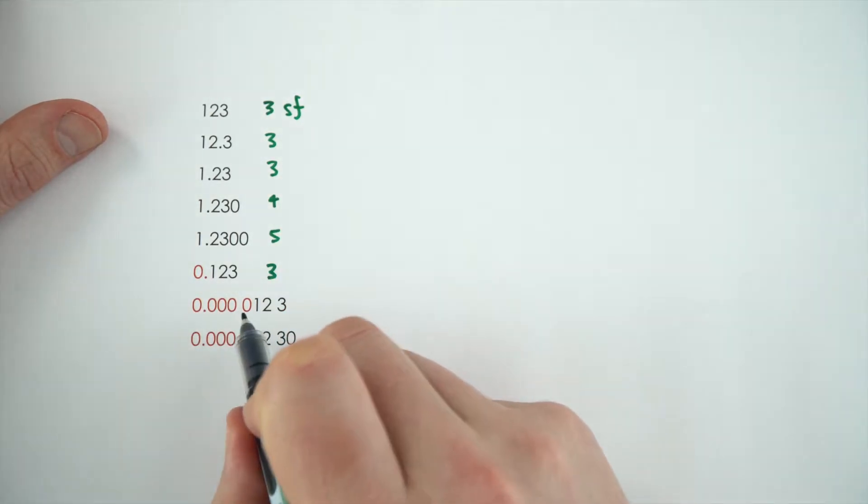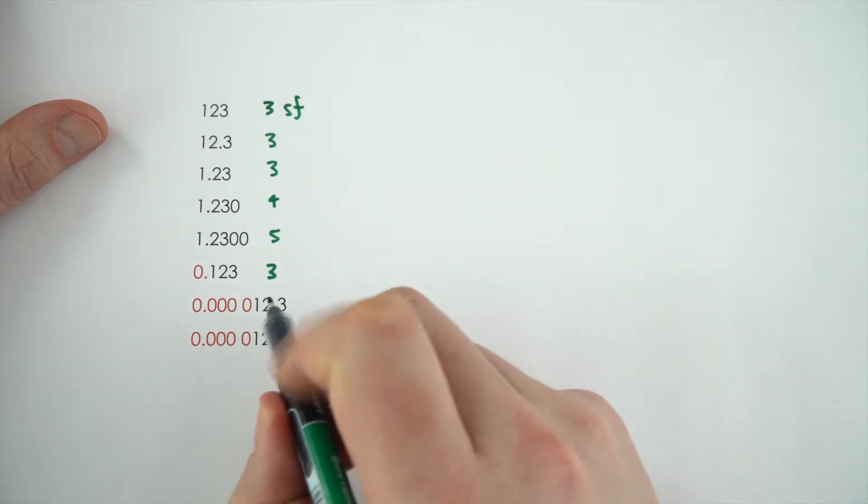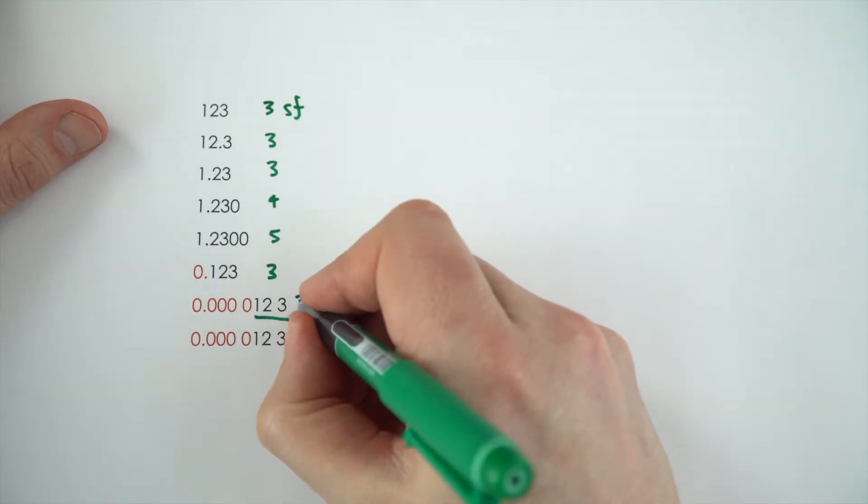and this one here, even though it's a lot smaller, it's still given as 0.0000123. Again, it's only these three numbers here that add to the significance. So, that's to three significant figures.